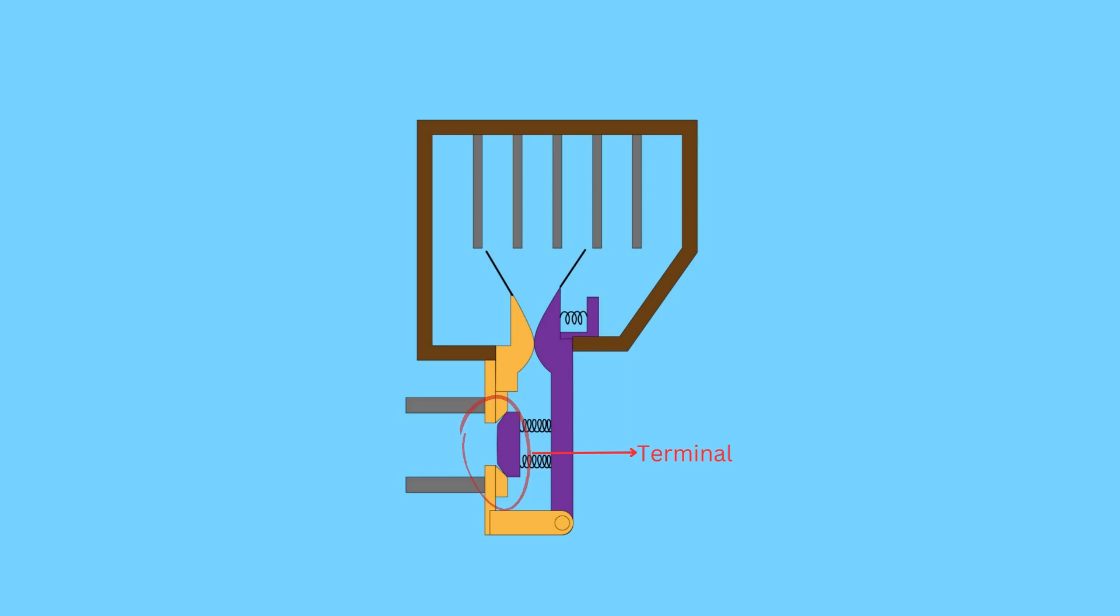Under normal conditions, the main contacts are used for the normal supply of current. Under fault current, the main contacts open first.